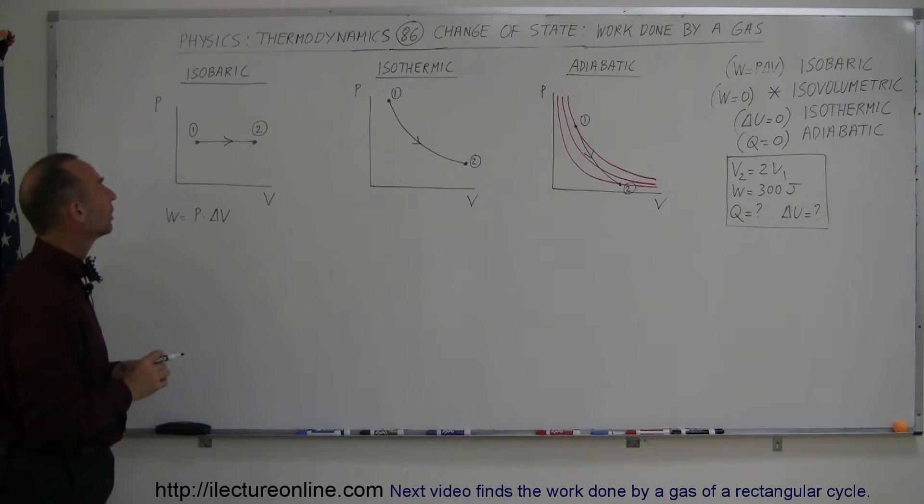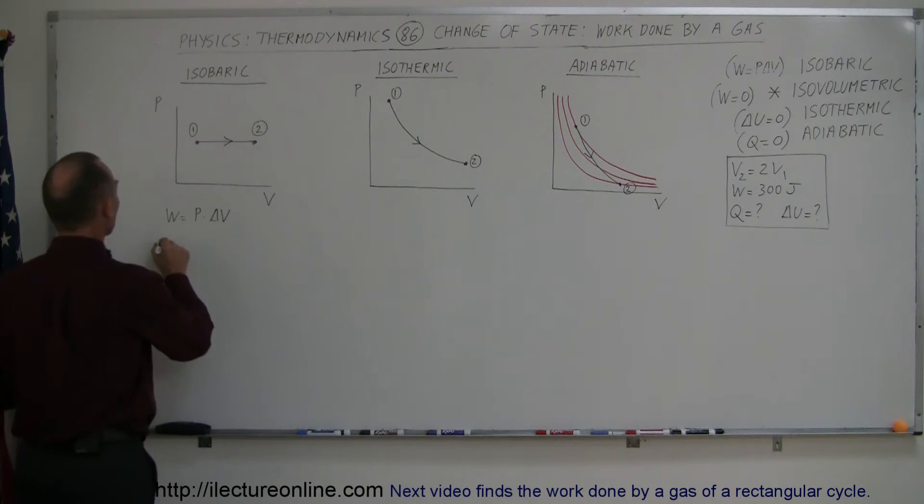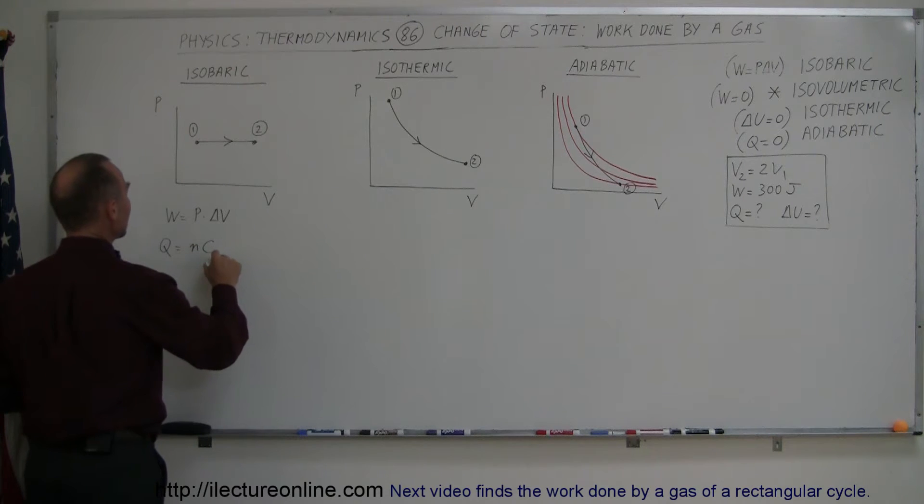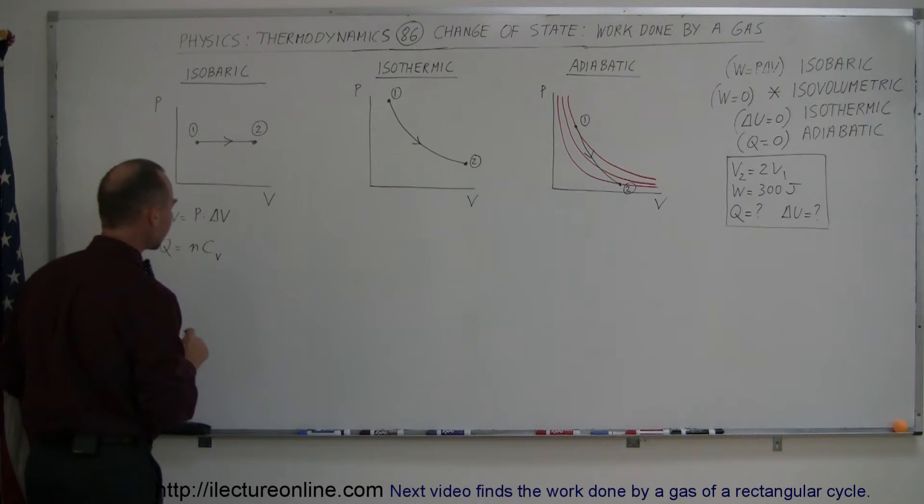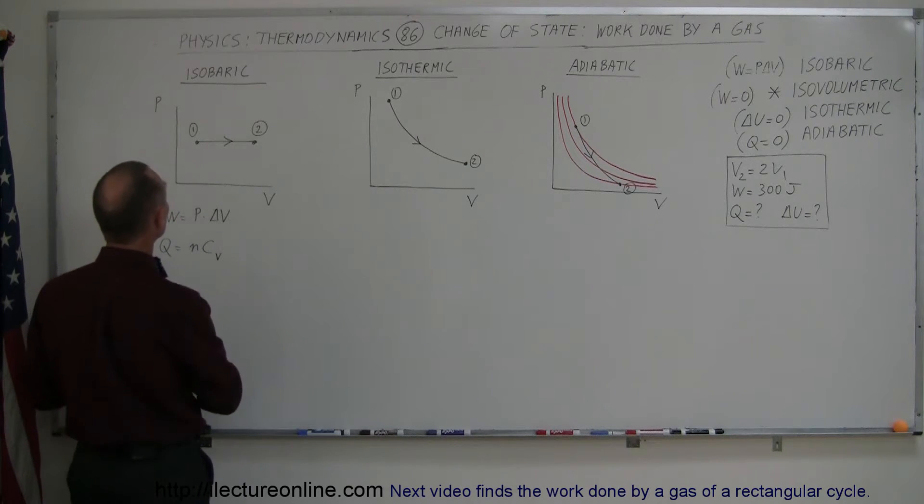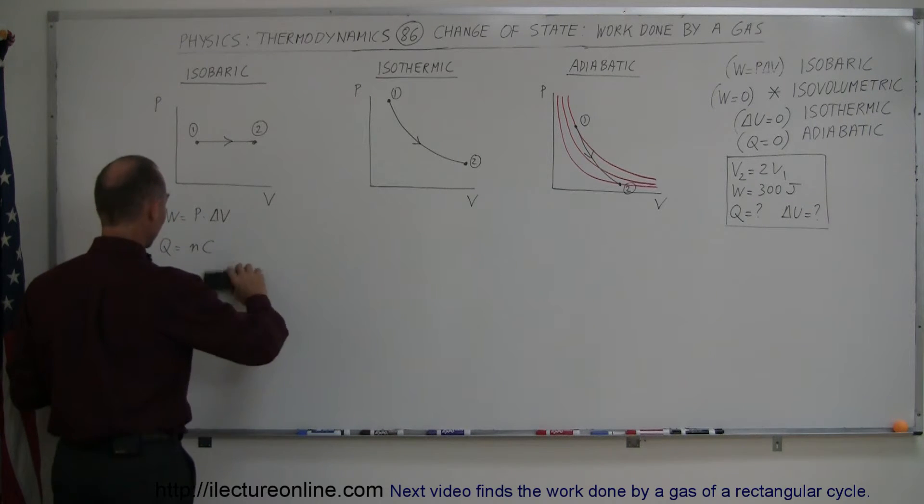Because we know that heat is added to the gas and the process is isobaric, so pressure stays the same. That means Q is equal to N times C sub V times C sub... No, not C sub V because volume doesn't stay constant. It's C sub P times delta T.